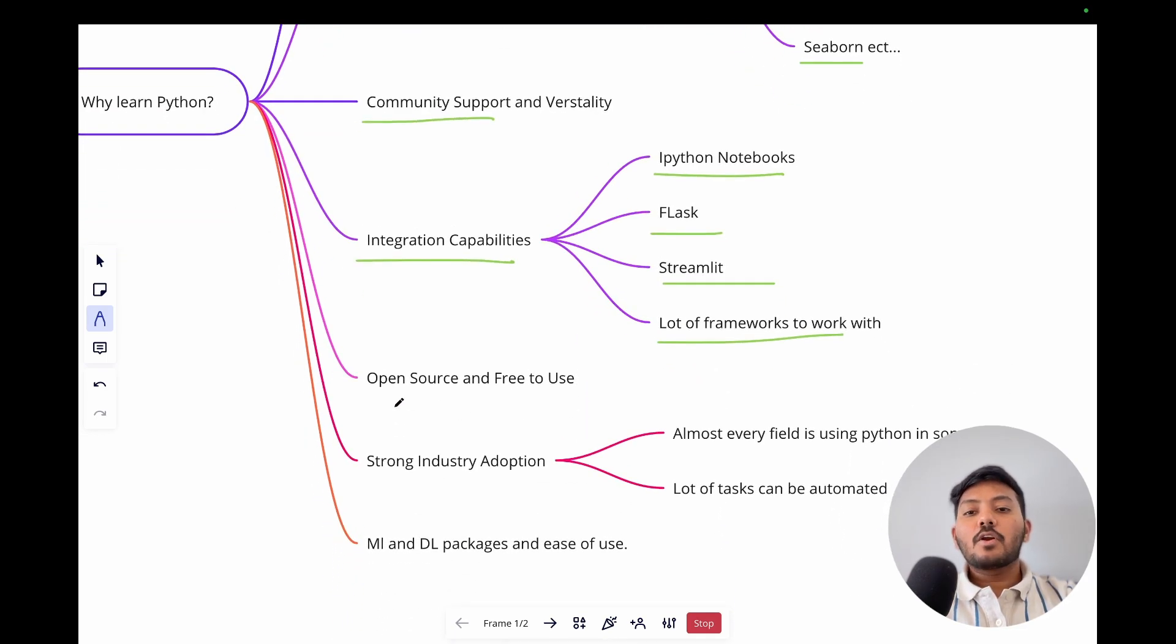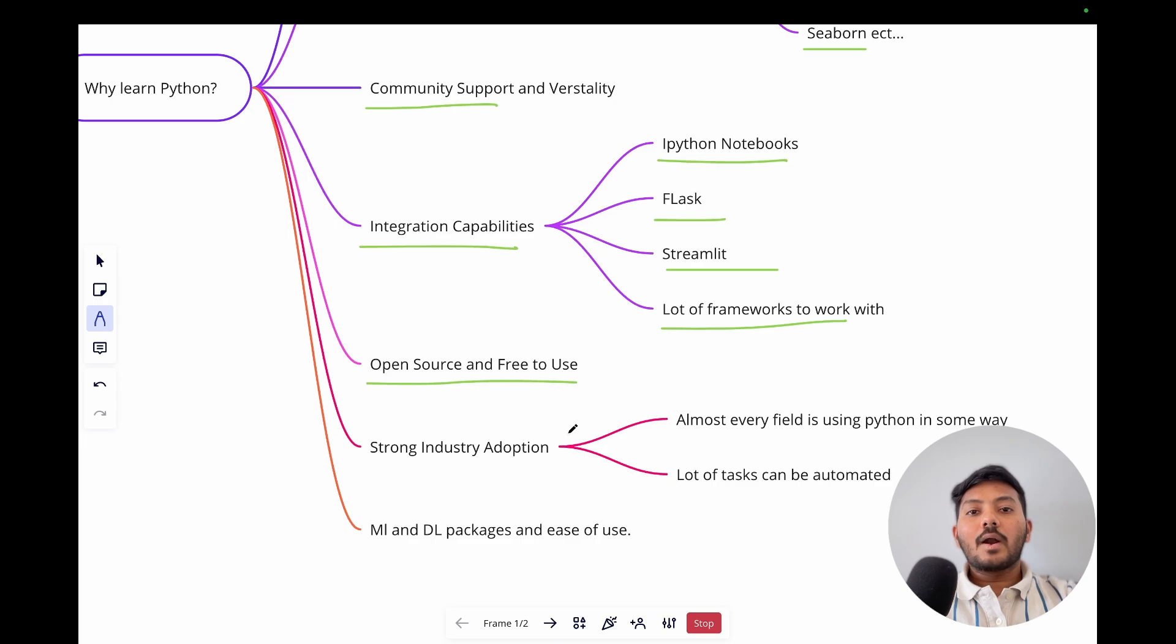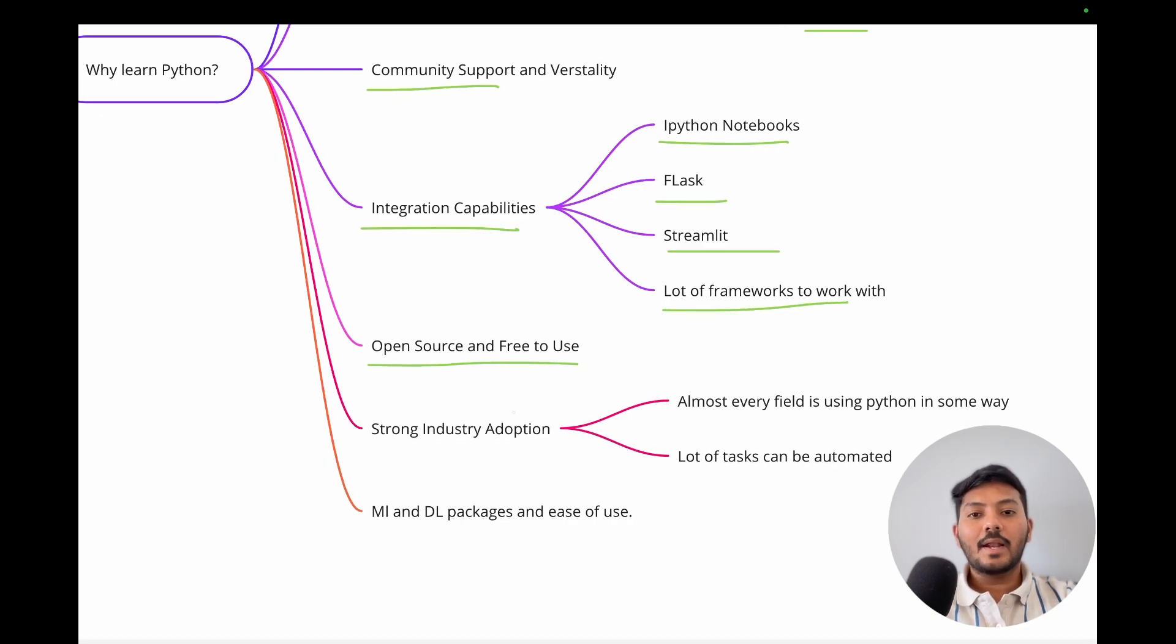One of the key factors that made Python popular is it's open source and free to use. You can download Python and use it for free in your production level applications. You don't need to pay any royalty to anyone.